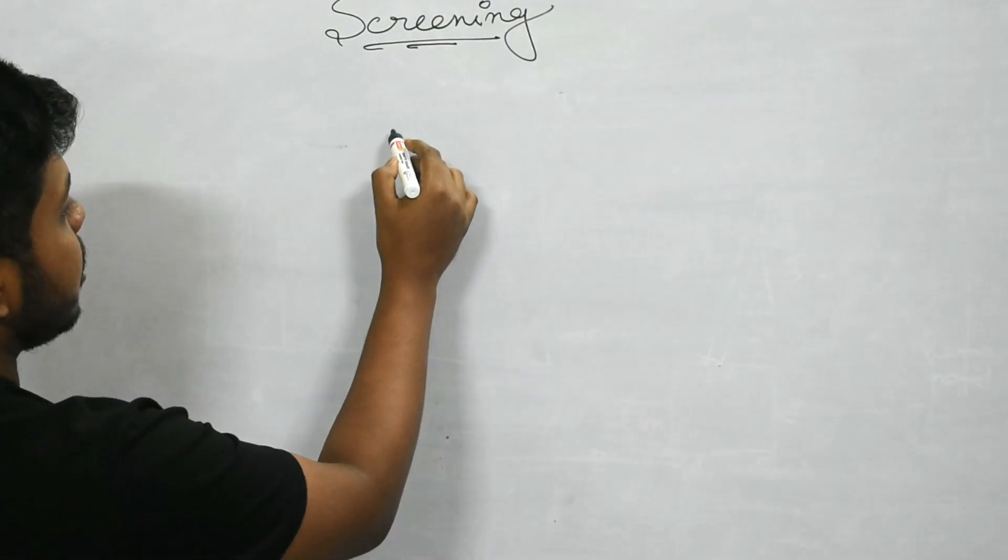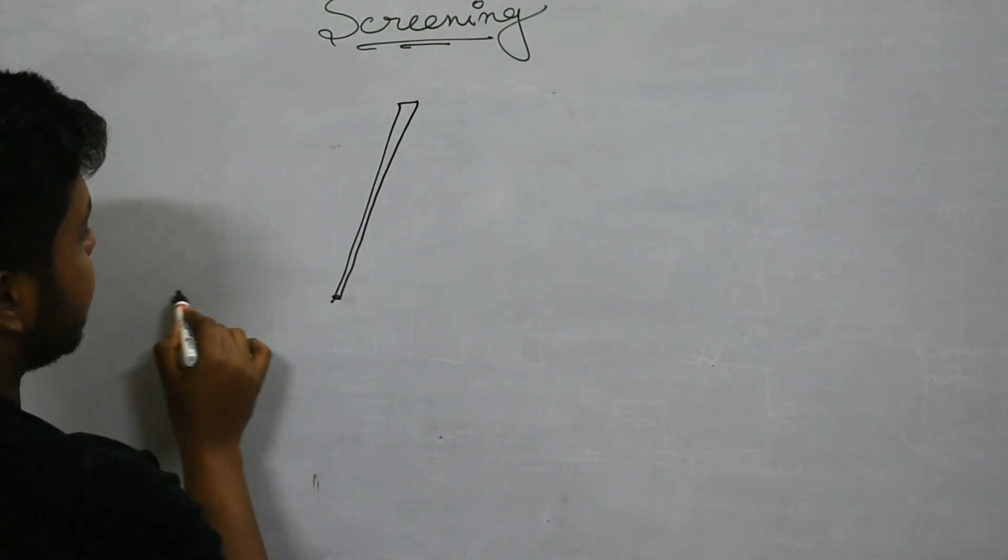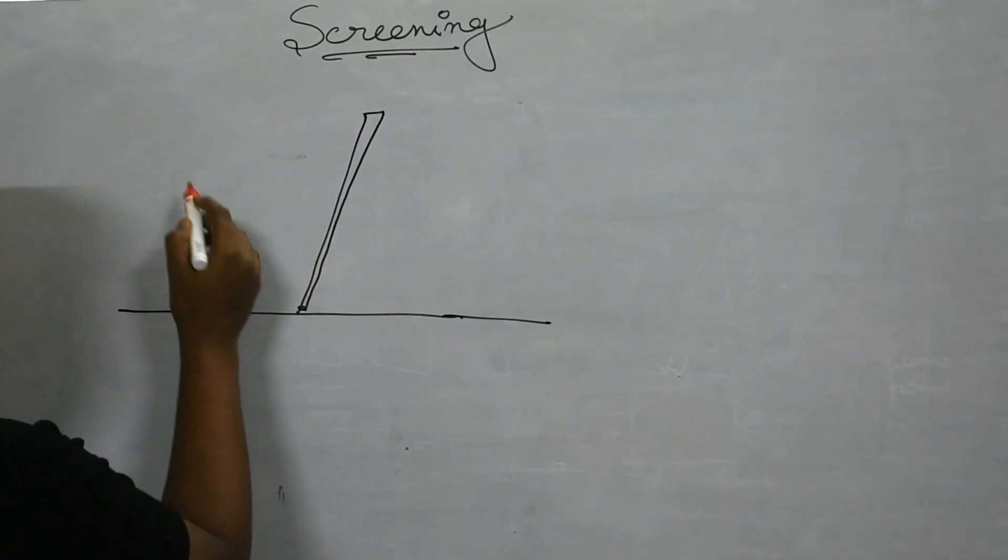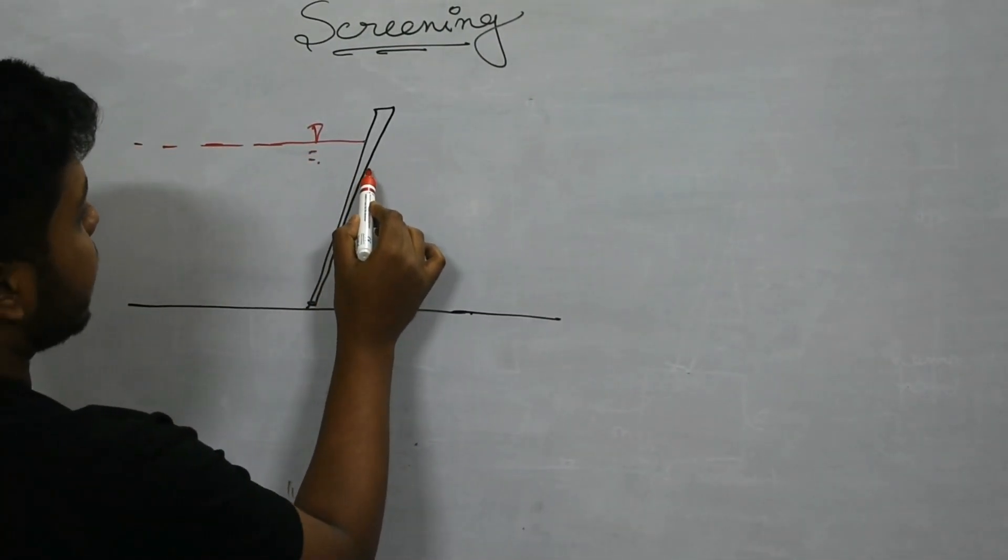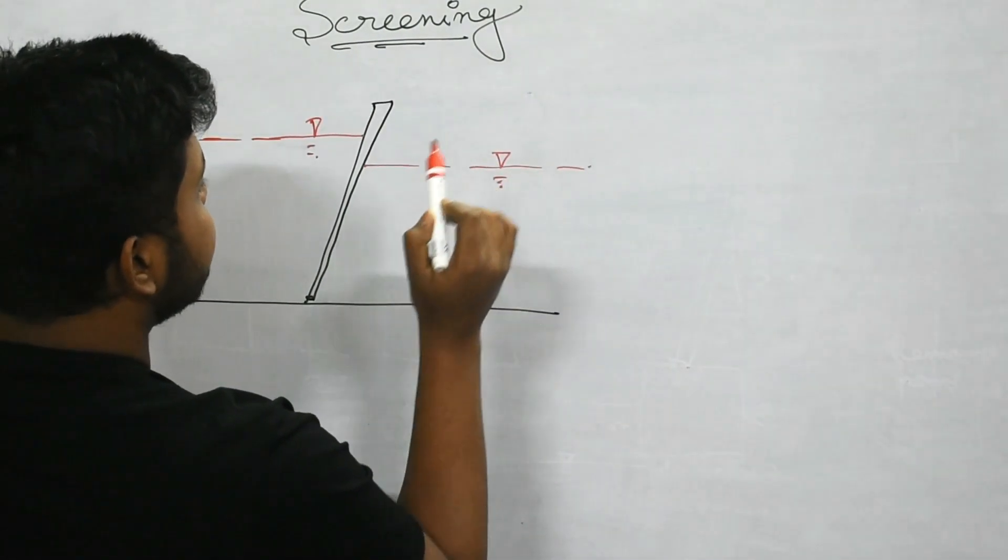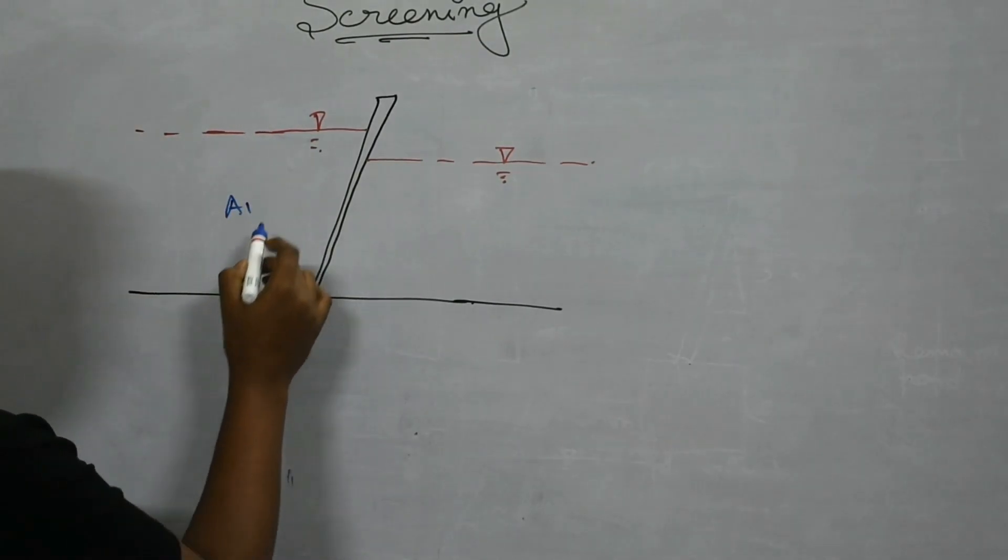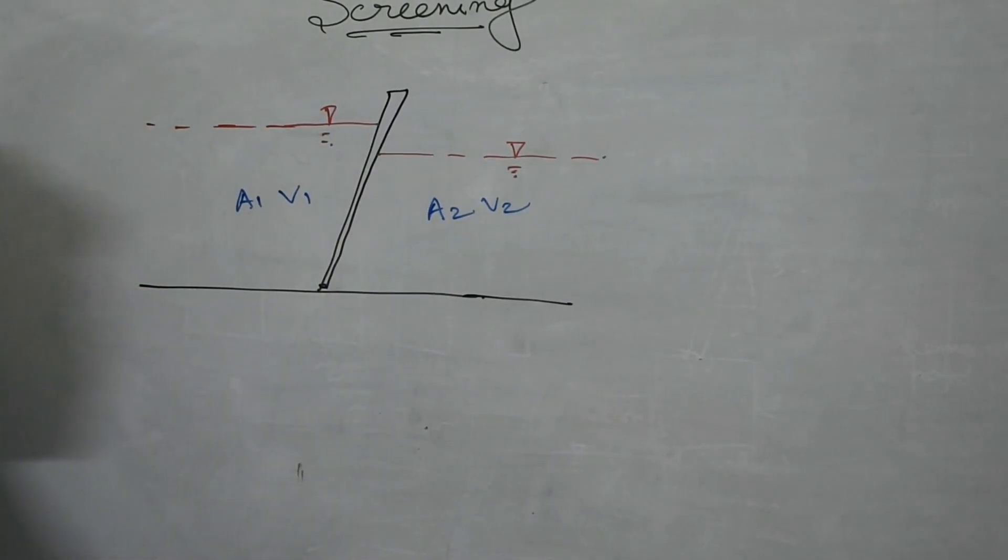If this is a screen and this is the incoming water, after some head loss the water level is here. Say here the area is a1 and the velocity is v1, here area is a2 and the velocity is v2.